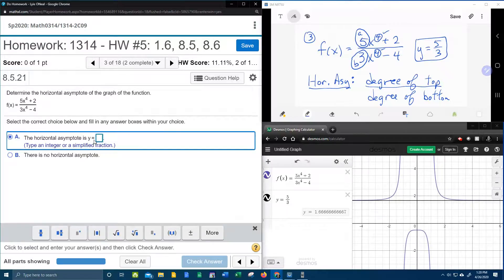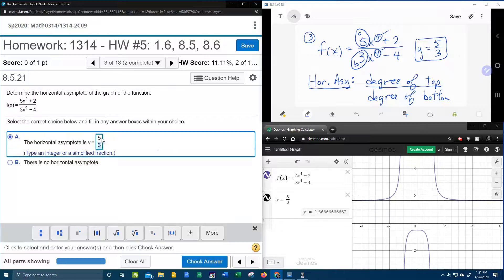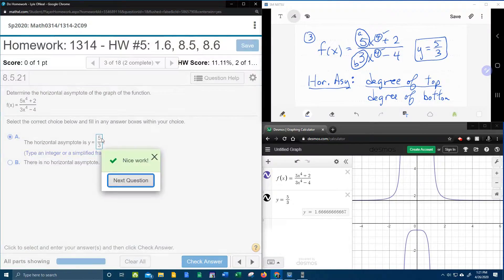Let's see if MyLabMath agrees. And notice it already has the y equal. So I just have to put the five-thirds. Bam. There you go. So I hope that was helpful.